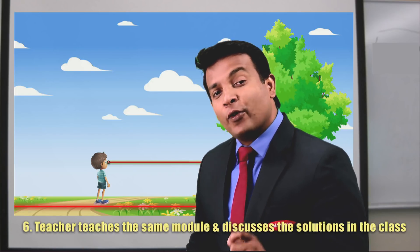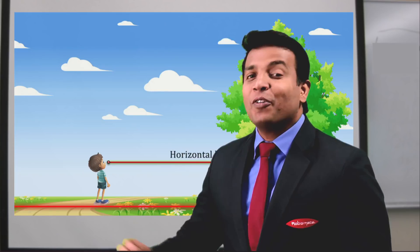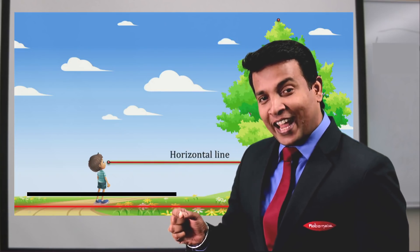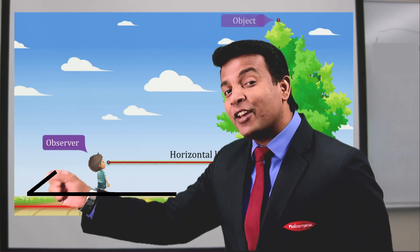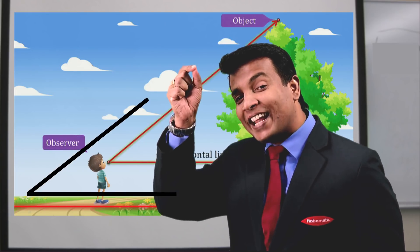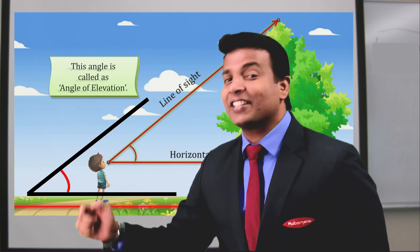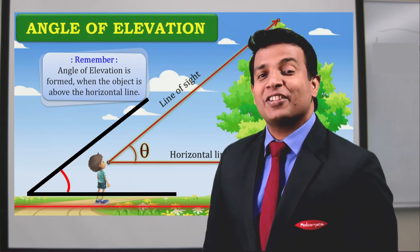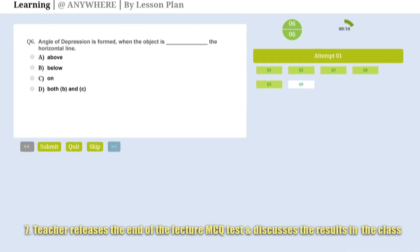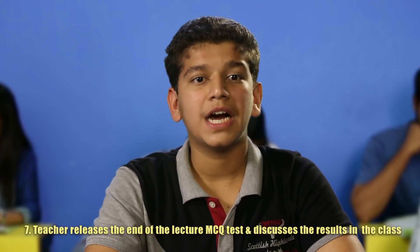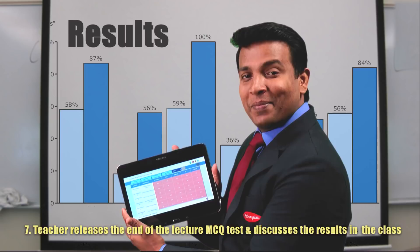Hi students, today we are going to learn the angle of elevation. For that, first we have the horizontal line, then we have the line of sight, and the angle made is nothing but the angle of elevation. As we pre-studied and got introduced to the module, the teacher could address the same topic in depth and revise. We did very well in our end-of-class test, and our teachers motivated us by displaying the results and discussing the solutions.